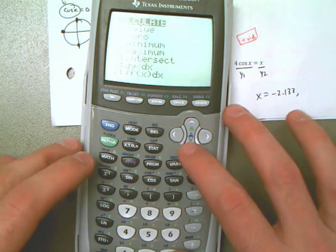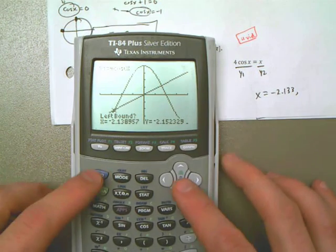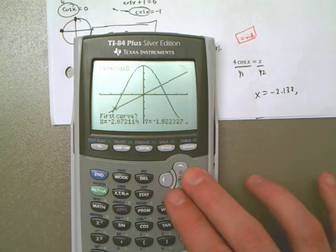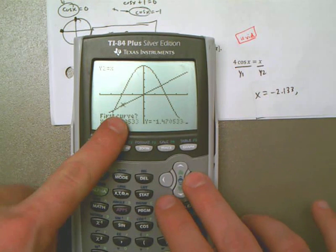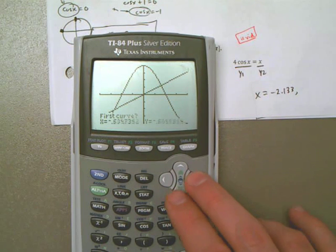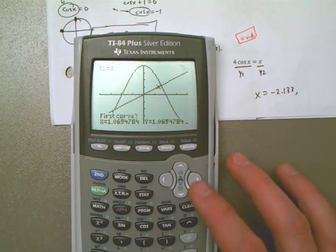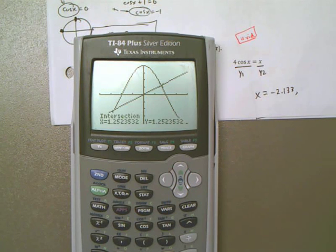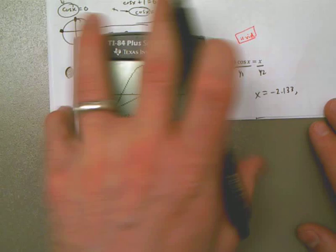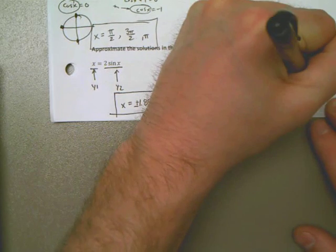And the second answer is going to be, second calc intersect. Oops, calc option 5. I'm going to hit the down button to go up the curve here instead. It's going to go a little bit faster. Close enough. Enter. 1.252 is the second solution.